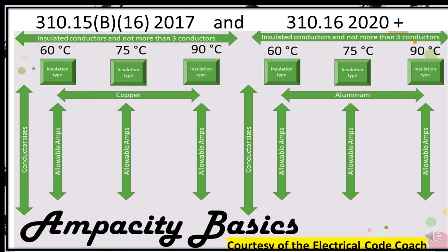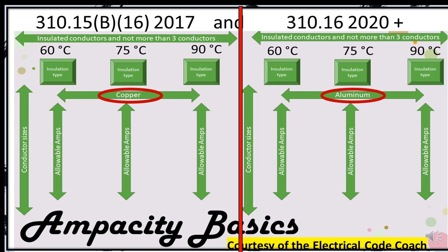The first distinction we want to make with this table is that it's actually two tables. On the left hand side is going to be for copper conductors, and on the right hand side is going to be for our aluminum and copper clad conductors. Left hand side copper, right hand side aluminum. And if you'll notice, they mirror each other, but in the NEC it's all combined into one table.